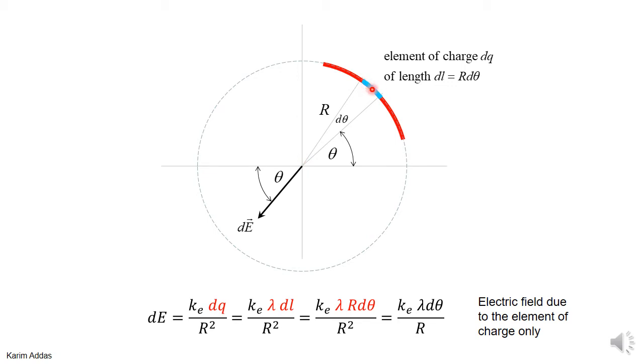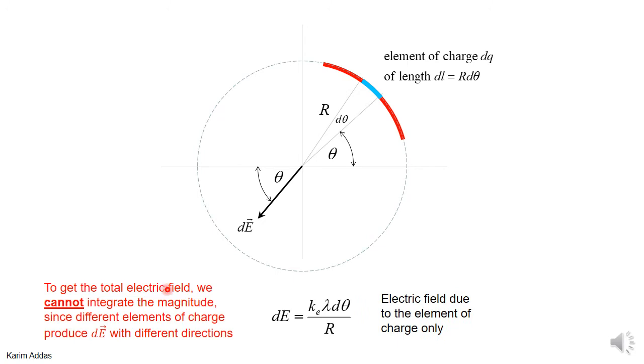From the previous file, we know that we can't add this. We can't sum this quantity, the magnitude. Because we have to add the electric field as a vector. Every single element of charge on this arc produces an electric field vector. We have to add these vectors as vectors. So the way to proceed in the problem is we have to find the X component first and then add those because all those have the same direction.